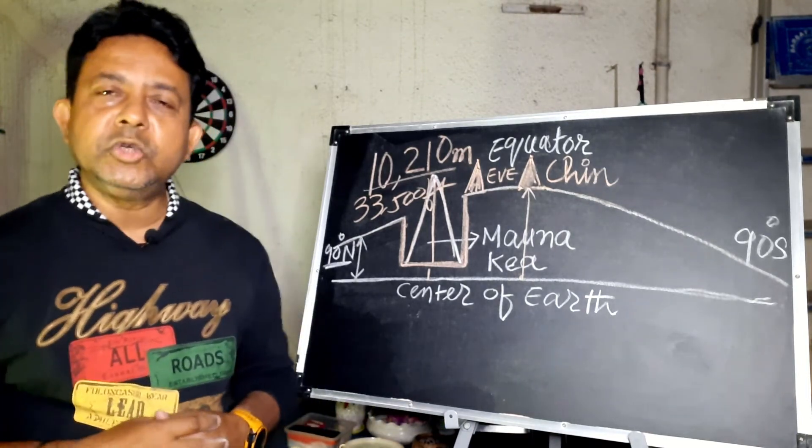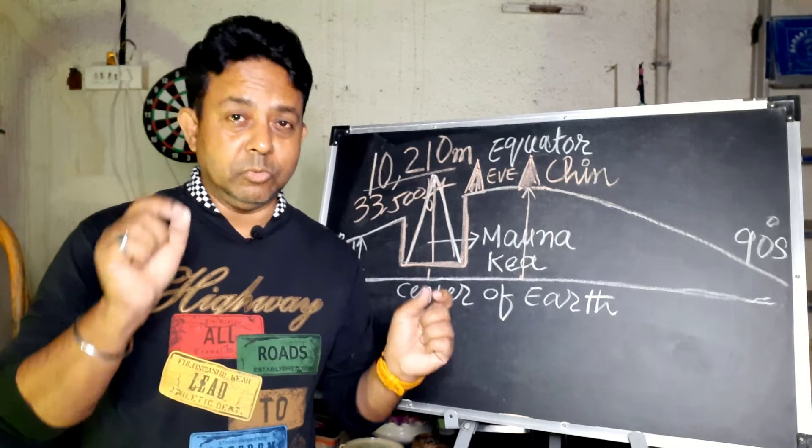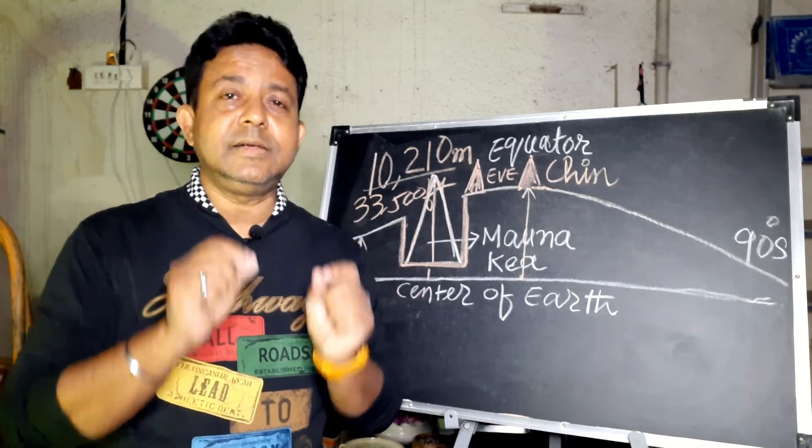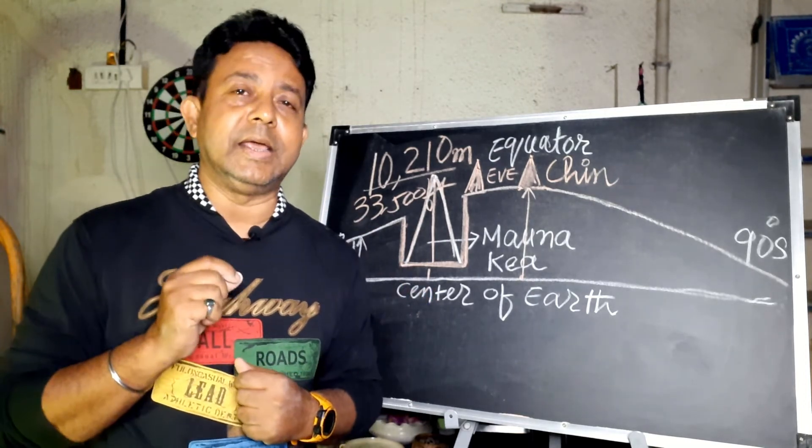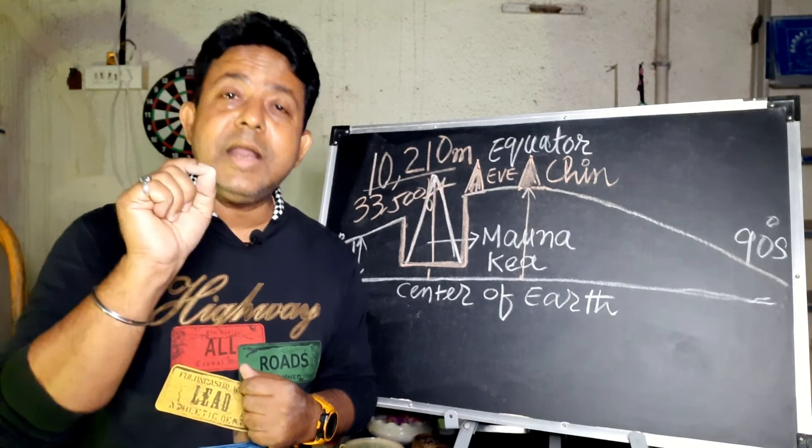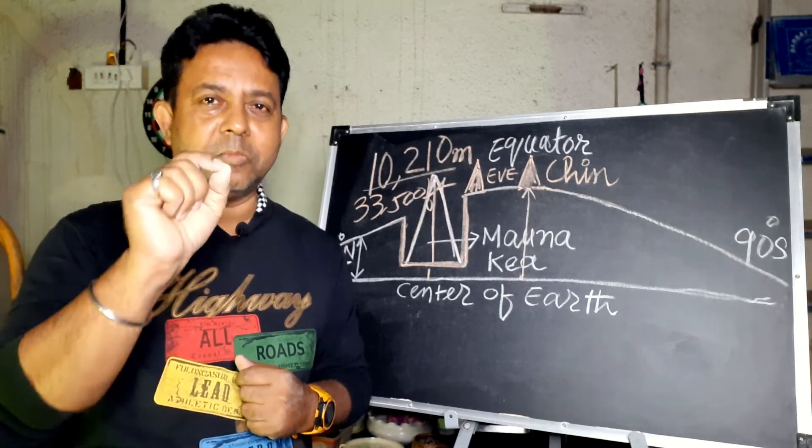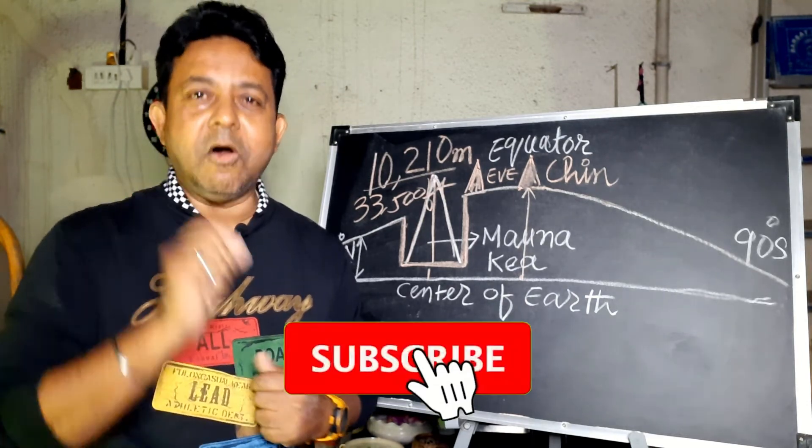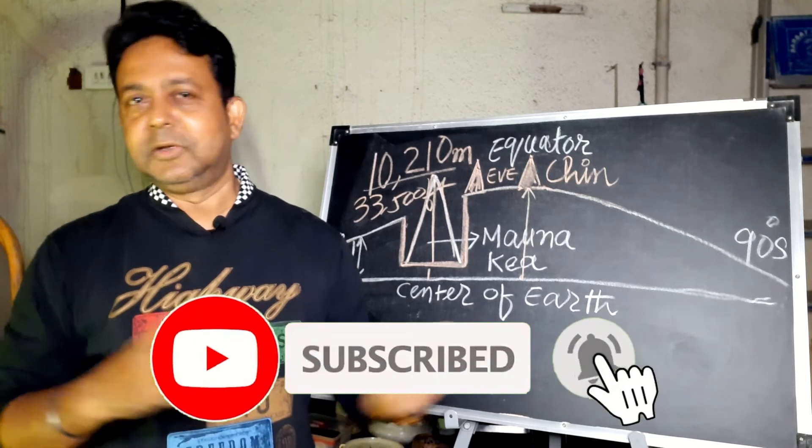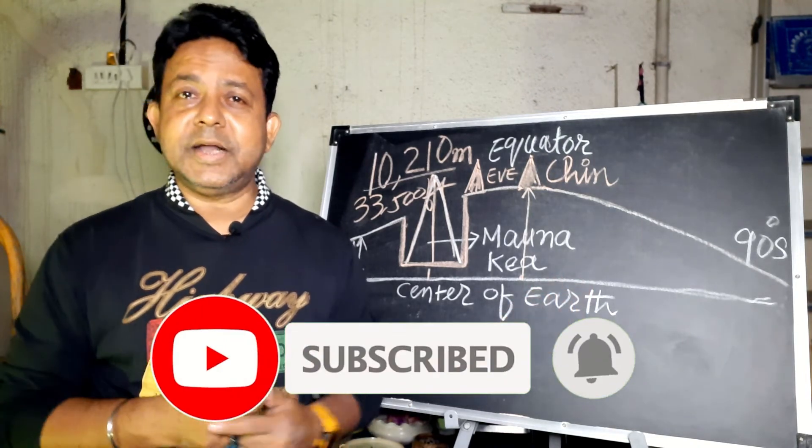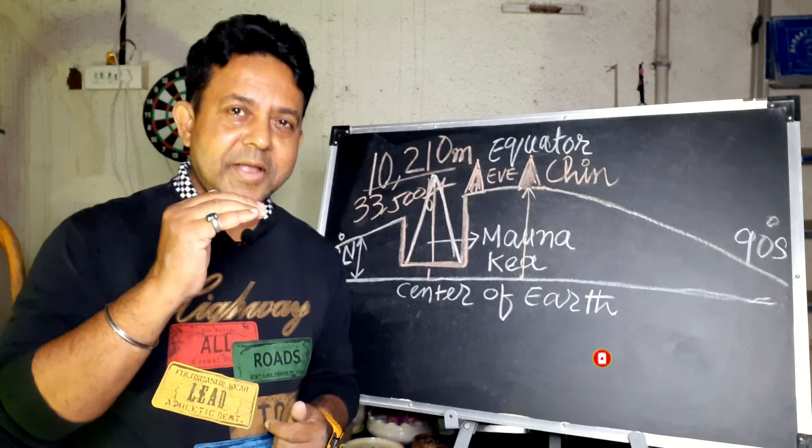What about Burj Khalifa? Burj Khalifa is 838 meters high and it is the tallest man-made object ever built on the Earth. So it's all about the datum from where you are measuring.